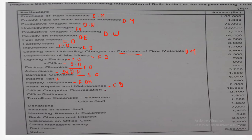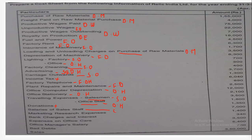Plant repairs and maintenance are related with factory overheads because plants are used in the factory. Computer depreciation — computer is used in office — so it will be office overheads. Office stationery is again related with office overheads. Traveling expenses of the salesman come under selling overheads, and office staff traveling will form part of office overheads. Donations are a non-cost item, so they will not form part of the cost sheet. Salaries of sales staff are related with selling overheads.